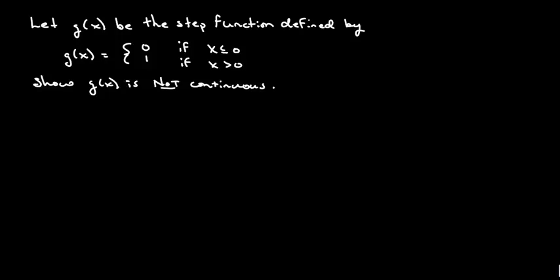We've got a function g of x and it's defined by this step function here. They ask us to show g of x is not continuous. So what we're going to do is we need to show,